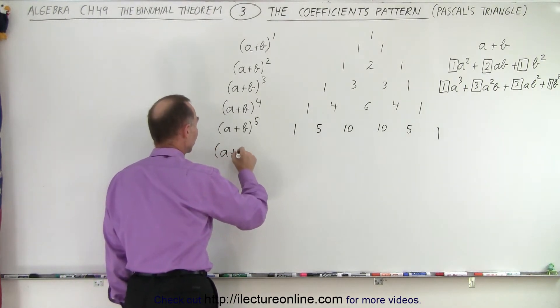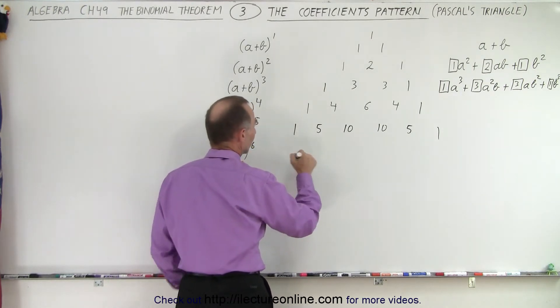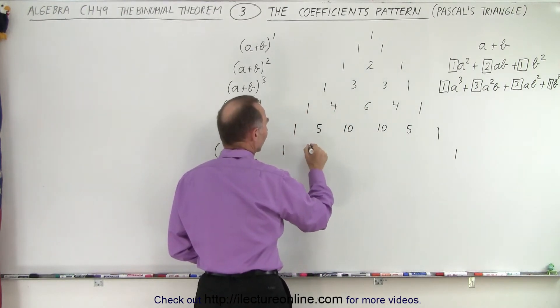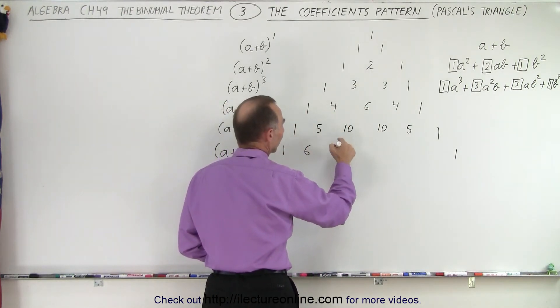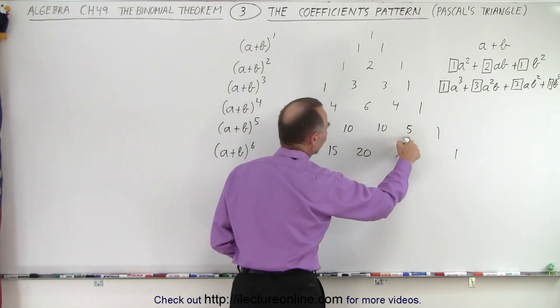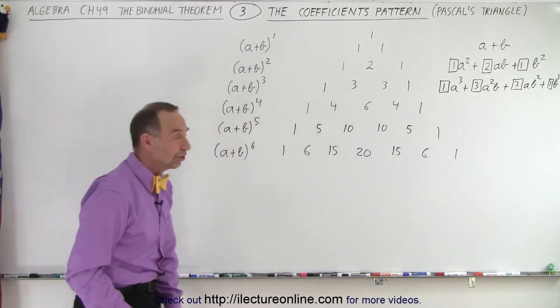Next, we get a plus b to the sixth power. So here we get 1. We move the ones out. So we put the 1 there. We put the 1 there. 1 plus 5 is 6. 5 plus 10 is 15. 10 plus 10 is 20. 10 plus 5 is 15. 5 plus 1 is 6. And there's the next set of numerical coefficients.